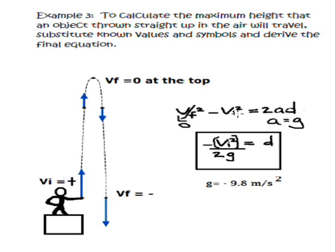We have VF squared minus VI squared equals 2AD. So if you look at the diagram here, the final velocity up here needs to be zero. If not, the object keeps going up forever and ever. So we know it's zero for a split second here.